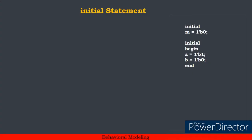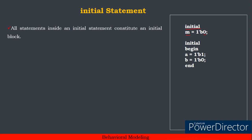So, what is the initial statement? The initial statement will be used to initialize. Now, m is the variable. I have to assign 0 to it. In initial, m is equal to 1'b0. This is a 1-bit binary number 0. We will assign m to this value and use initialize.